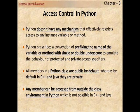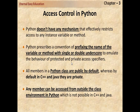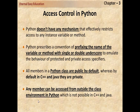Python does not have any mechanism that effectively restricts access to any instance variable or method. Python prescribes a convention of prefixing the name of the variable or method with a single or double underscore to emulate the behavior of protected and private access specifiers. There is no keyword of private, protected, or public, but there is another method to implement that. All members in Python classes are public by default, whereas in C++ and Java they are private by default. Any member can be accessed from outside the class environment in Python, which is not possible in C++ and Java.